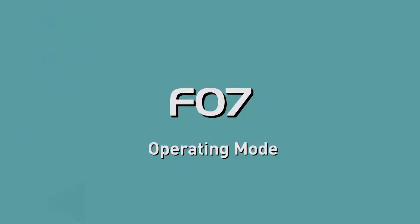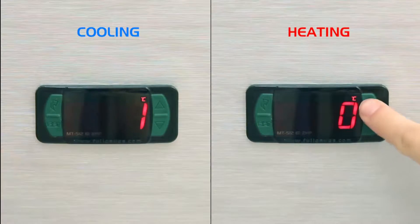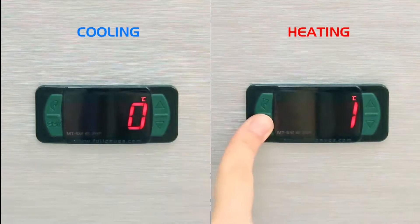F07, Operation Mode. To operate in cooling, assign the 0 value, and value 1 to operate in heating.